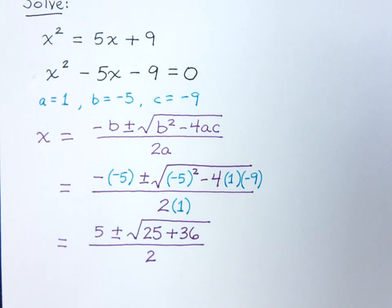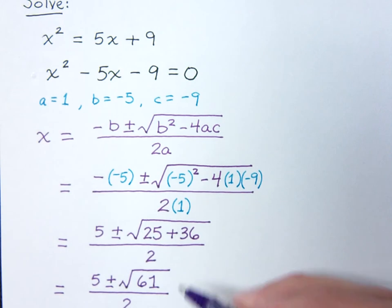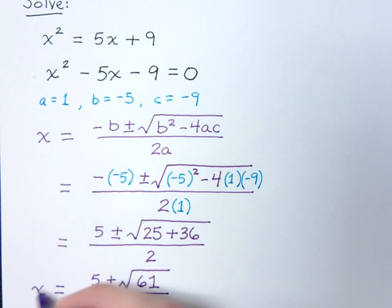And the only thing that we really have left to do here is to simplify the radicand. So, that's 5 plus or minus the square root. 25 plus 36 equals 61. And this is all over 2. Now, there's nothing else that we can do here. You can't simplify this radical, so it is what it is. So, this will be your final answer.